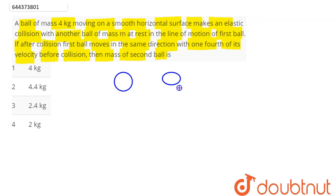So here the question says there are two balls. In the question it is being said that initially the ball of 4 kg mass is moving on a smooth horizontal surface along the x-axis. On collision with the second body which is at rest, after collision